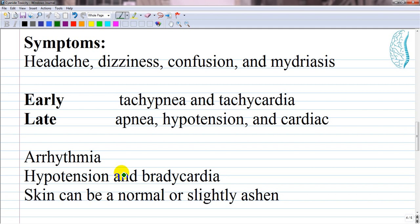Early respiratory and cardiovascular signs include tachypnea and tachycardia, while late findings include apnea, hypotension and cardiac arrhythmia. Hypertension and bradycardia are common in cyanide poisoning. It is important to note that a patient's skin can be a normal or slightly ashen appearance despite tissue hypoxia.